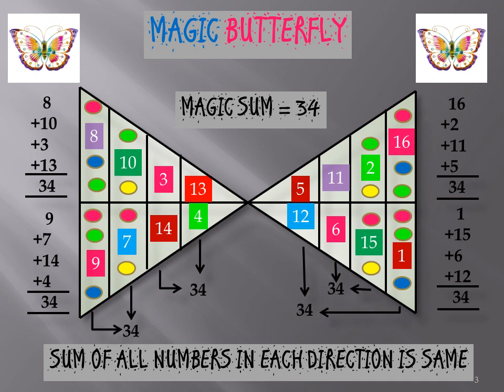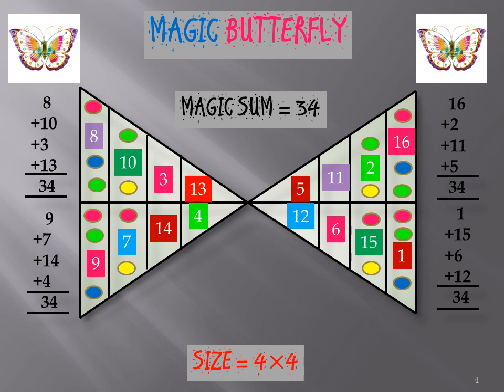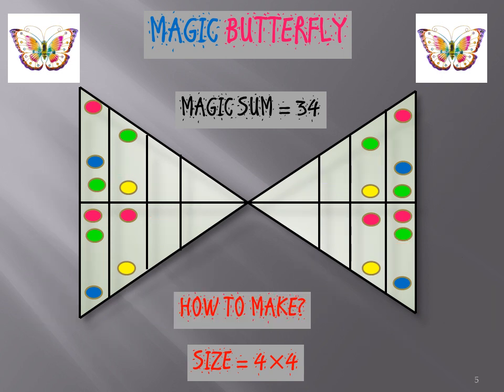This is a 4 by 4 butterfly — I am saying 4 by 4 because on each wing, horizontally you can see it contains four cells, and vertically each wing contains two cells. So if you add any two cells vertically, you will get the sum 17, which is half of the magic sum.